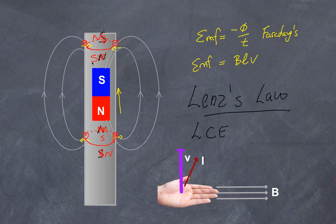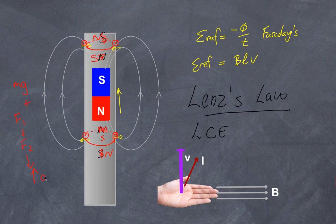To illustrate why, consider the opposite scenario: if the eddy currents produced poles that attracted rather than repelled — say a south pole where a north should be — then combined with gravity, you'd have an attraction force F1 and a repulsion F2 both accelerating the magnet. It would keep speeding up indefinitely, meaning energy out exceeds energy in — a violation of conservation of energy. That cannot happen, which is exactly what Lenz's Law prevents.